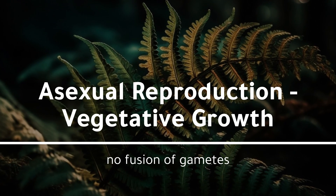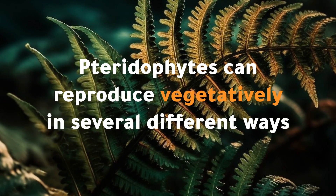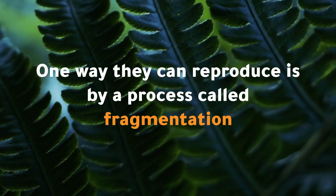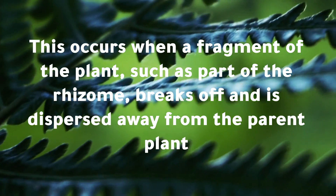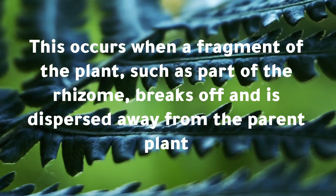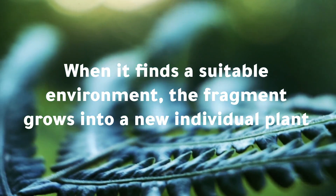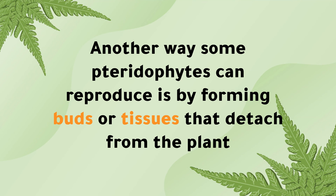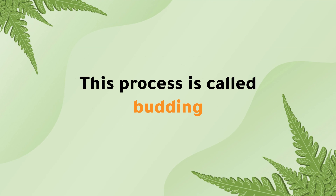Asexual reproduction — vegetative growth. Pteridophytes can reproduce vegetatively in several different ways. One way they can reproduce is by a process called fragmentation. This occurs when a fragment of the plant, such as part of the rhizome, breaks off and is dispersed away from the parent plant. When it finds a suitable environment, the fragment grows into a new individual plant. Another way some pteridophytes can reproduce is by forming buds or tissues that detach from the plant. These propagules are dispersed away from the parent plant and grow into new individual plants. This process is called budding.